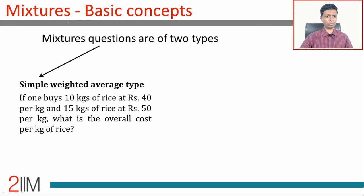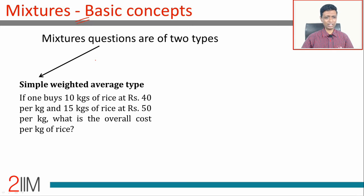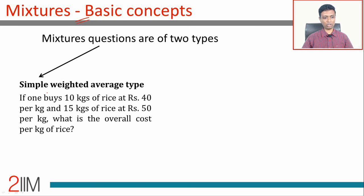I'm going to cover basic theory on mixtures — basic concepts. Mixture questions are of two types; I'll deal with one type first and then go to the next. The first type is the simple weighted average type. Let's look at this question: one buys 10 kilograms of rice at rupees 40 per kilogram and 15 kilograms of rice at rupees 50 per kilogram. What is the overall cost per kilogram of rice?